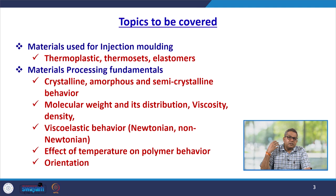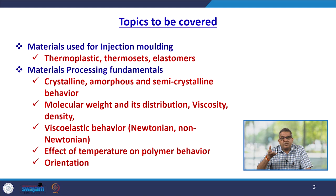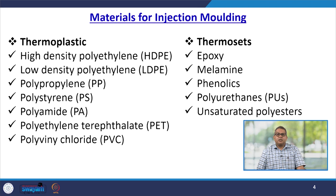Temperature plays a very crucial role because the ultimate aim is to get the final product in the desired form. If we are not maintaining all these parameters, we may get a deformed part or a product which is not as per our specification. Let us discuss the first segment — that is, the various materials that can be used for injection moulding.